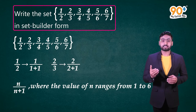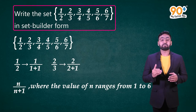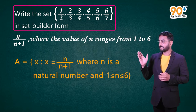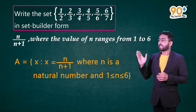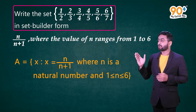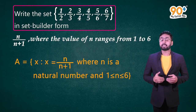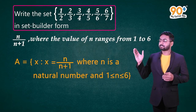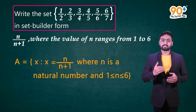So let's write our set builder form. Let's denote it with A. We can write A = {x : x = n/(n+1), n ∈ N, 1 ≤ n ≤ 6}. This is our required set.